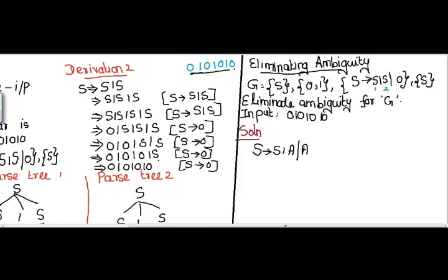I have completed the first production. The next step is to go to the second production. In the second production I should start with A, the new non-terminal I introduced. Writing it as the next production, and since there is no other non-terminal, I write A → 0. Hence I completed the new productions: S → S1A, S → A, and A → 0.